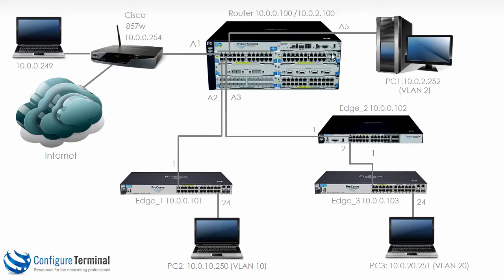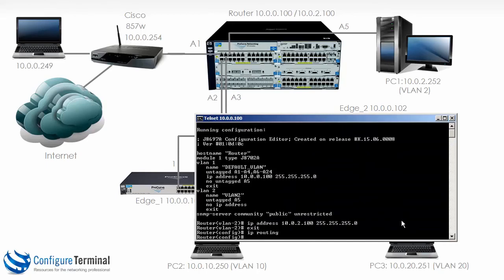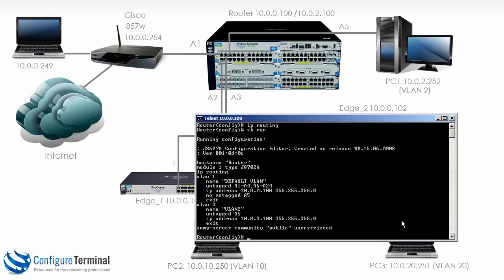Inter-VLAN routing has been enabled on the 5406. Just to summarize the required steps: we firstly had to enable inter-VLAN routing on the 5406 by typing the command 'ip routing'. Looking at show run, we had to enable IP routing on the 5406.